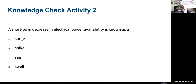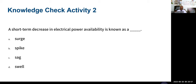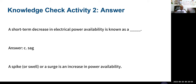Question: a short-term decrease in electrical power availability is known as what? The answer is sag. If you think about somebody wearing pants and sagging their pants — whether you consider that short-term or long-term — a short-term decrease in electrical power is known as a sag.